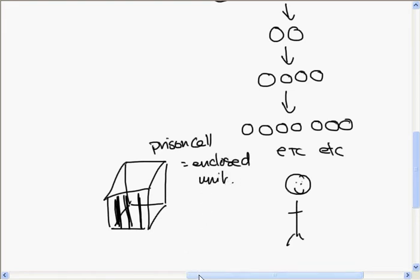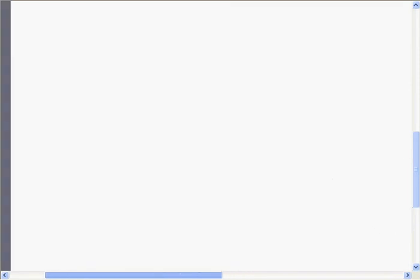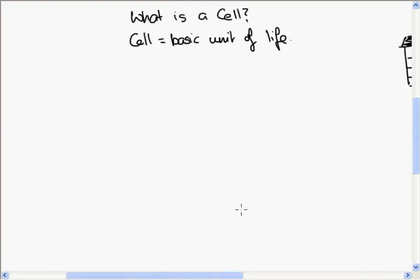Okay, so what we know is that the cell is the basic unit of life, and the cell is an enclosed unit. So what is a cell? Basic unit of life. Now the next thing I want to look at is the two main types of cells, and the two main types are prokaryotic and eukaryotic cells.